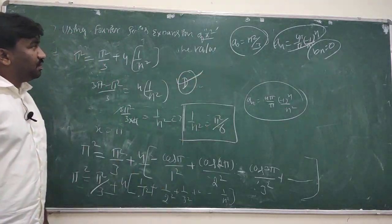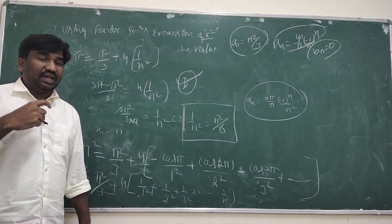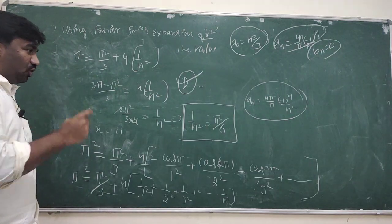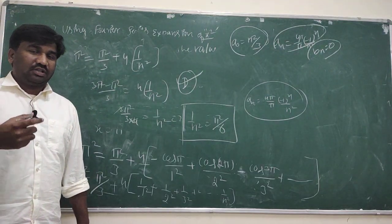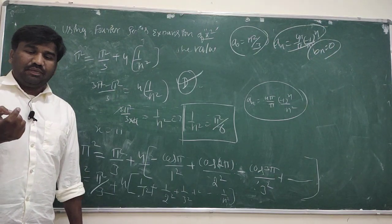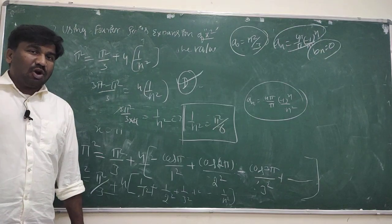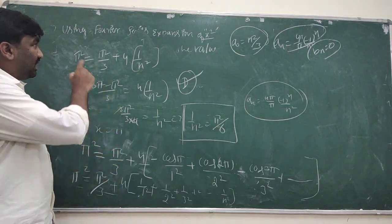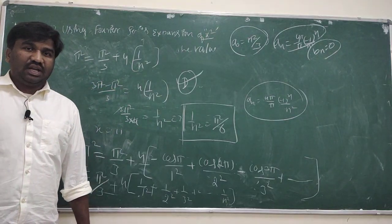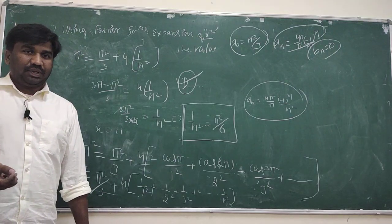Fourier series and Fourier transformation questions look lengthy but are easy with practice, because all questions are of similar type — either x², x, or a constant. If you remember the series f(x) = a₀ + aₙcos(nx) + bₙsin(nx), it is definitely easy to solve.